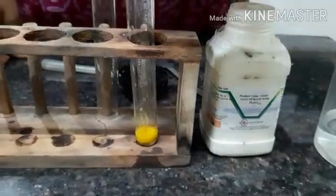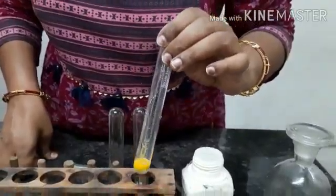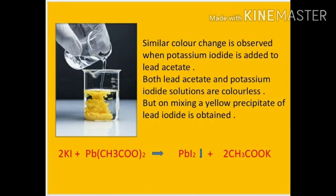A yellow precipitate has formed. In this reaction, the color changes from white to yellow. The chemical reaction is: lead nitrate Pb(NO₃)₂ plus 2KI potassium iodide forms lead iodide — which is yellow in color — and potassium nitrate, which is colorless. A similar color change is observed when potassium iodide is added to lead acetate. Both lead acetate and potassium iodide solutions are colorless, but on mixing, a yellow precipitate of lead iodide is obtained. Potassium iodide plus lead acetate forms lead iodide — a yellow color precipitate — and potassium acetate.